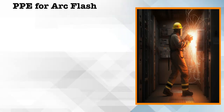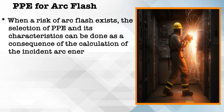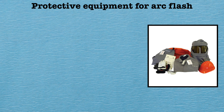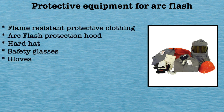For arc flash PPE — when a risk of arc flash exists, the selection of PPE can be done based on calculation of incident arc energy or by consulting a hazard category classification table, such as found in NFPA 70E (National Fire Protection Association standard 70E). Protective equipment for arc flash consists of flame-resistant protective clothing, an arc flash protection hood, hard hat, safety glasses and gloves.